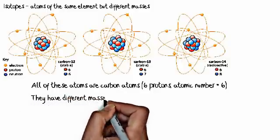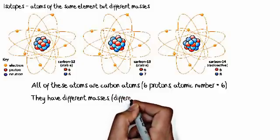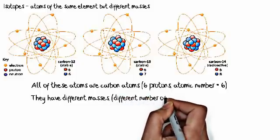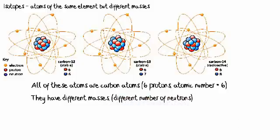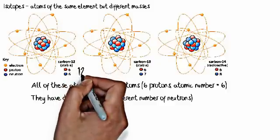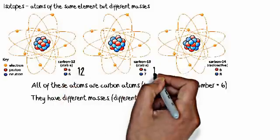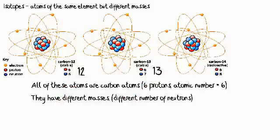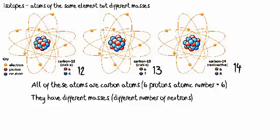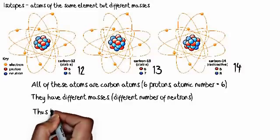Remember, mass is protons plus neutrons. So they have a different number of neutrons. Since they all have the same number of protons, they have different numbers of neutrons. If you add the protons and neutrons together, you get 12 for carbon-12, 13 for carbon-13, and 14 for carbon-14.